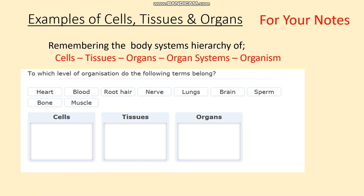Hopefully you didn't find that too difficult. The cells — which you should remember from our first topic — are blood cells, root hair cells, nerve cells, and sperm cells. The tissues are bone tissue and muscle tissue. And finally, the organs are the heart, the lungs, and the brain. Please correct any you got wrong and make sure you've got that table in your books.